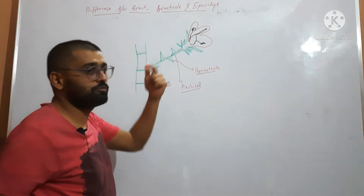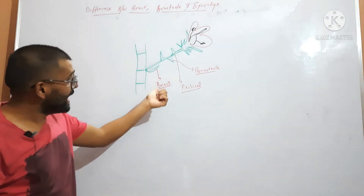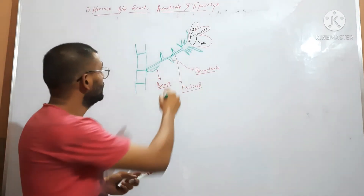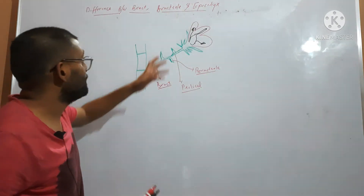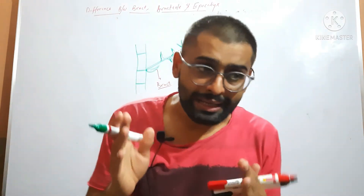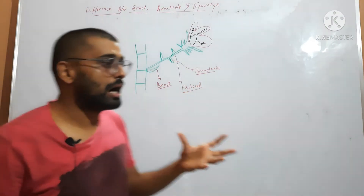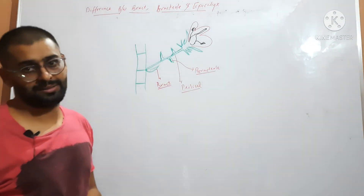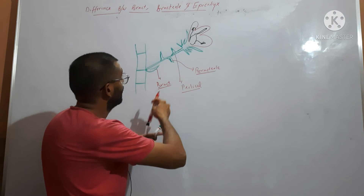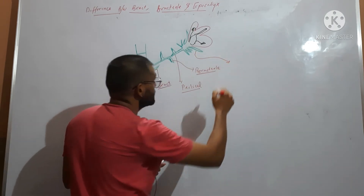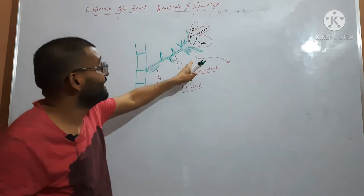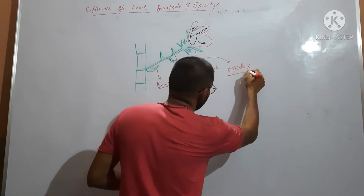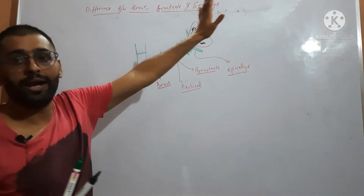The next one is epicalyx. Epicalyx is nothing but bracteoles, but these bracteoles are in the form of clusters and they are present below the calyx. So, any bracteoles that are in groups and present below the calyx are called epicalyx. This is the difference between bracteole and epicalyx.